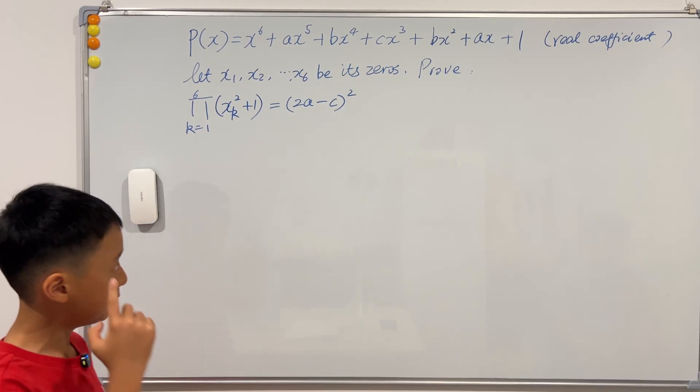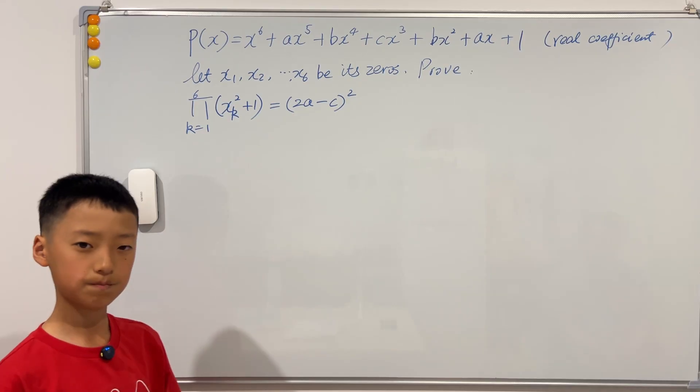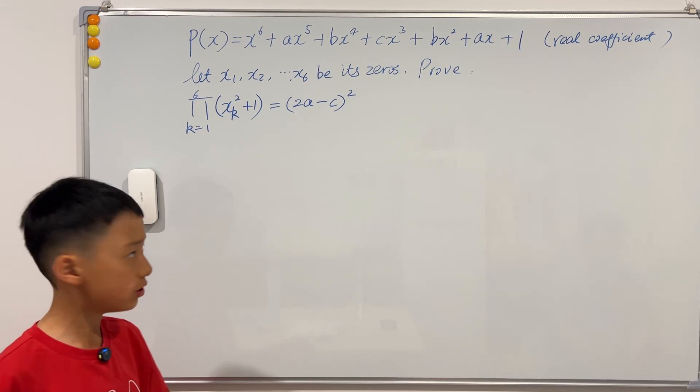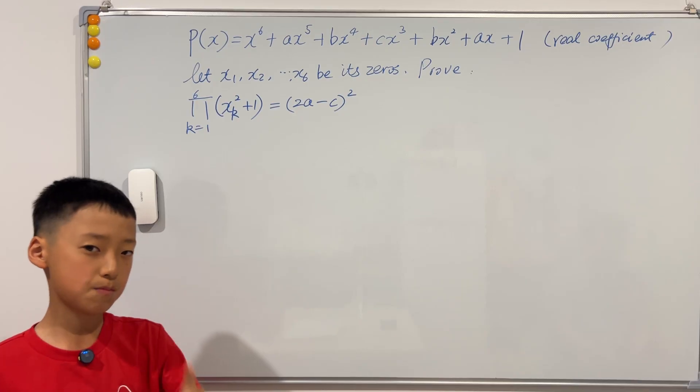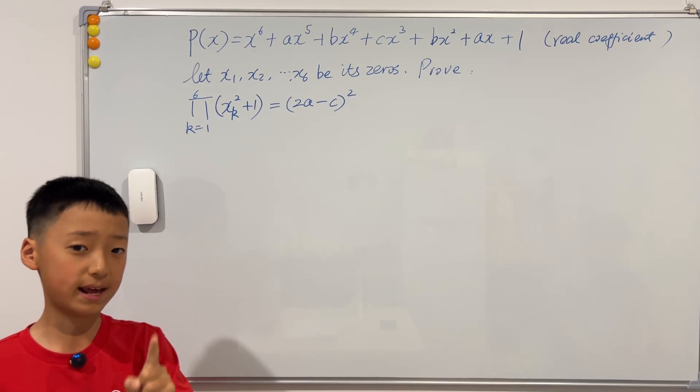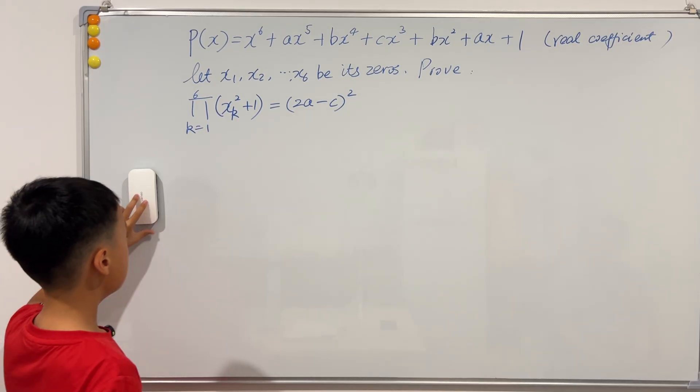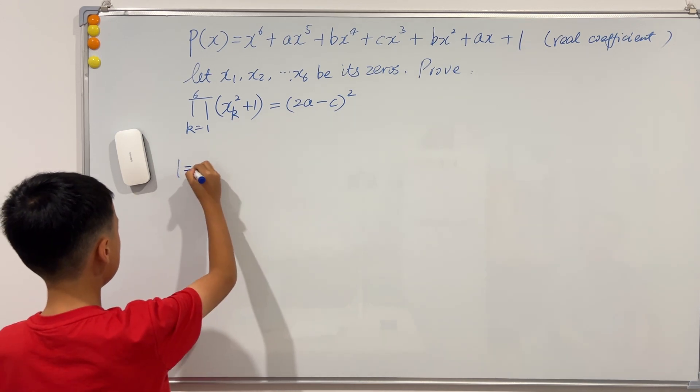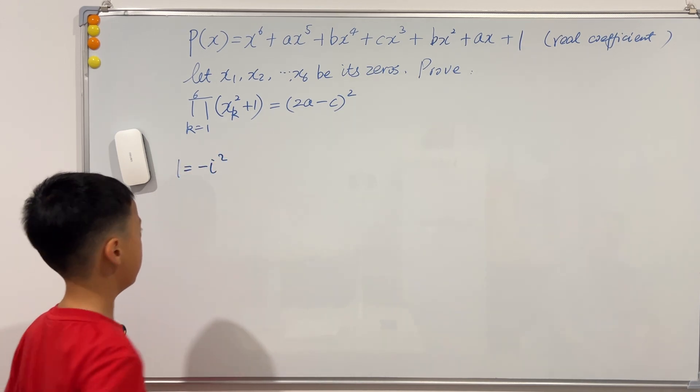Well, the easiest way that will come to mind is factorize this, but we can't factorize this with just real numbers. So that is why in this method we are going to use complex numbers. So we know that one is negative i squared, right?